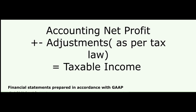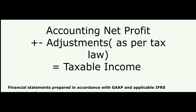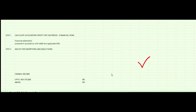In the first step, you calculate accounting profit for a particular tax period or financial year. You can get that net profit from your financial statements prepared in accordance with GAAP or applicable IFRS. Once you have that net profit from the financial statements, add or deduct the adjustments according to tax laws.